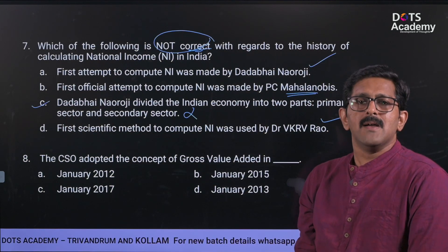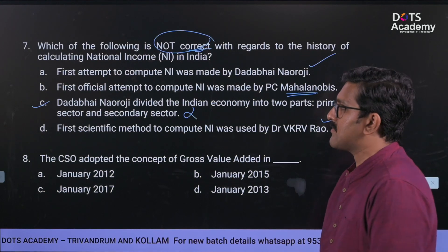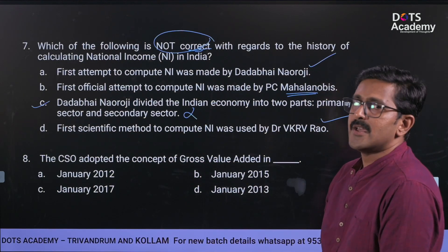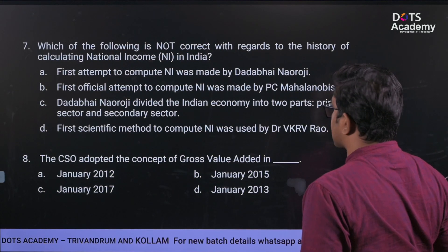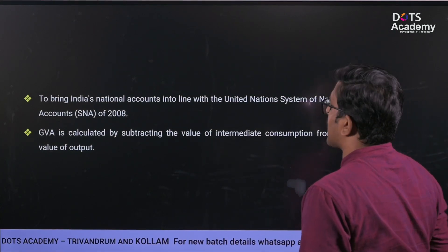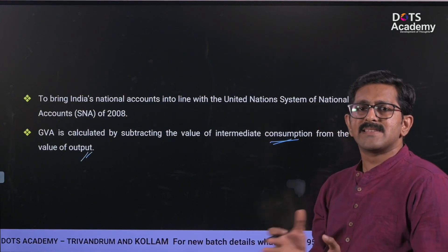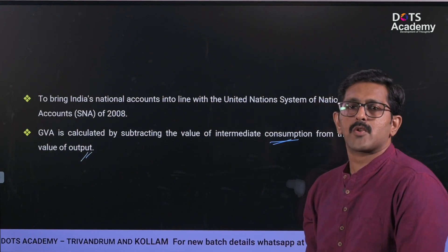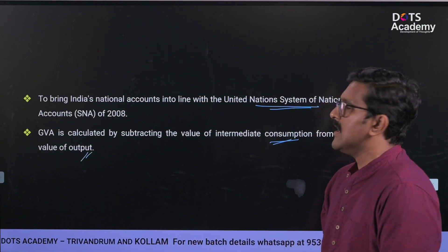Dadabhai Naoroji's notable book is 'Poverty and Un-British Rule in India,' which introduced the drain of wealth theory and is significant in the context of national income calculation. The CSO adopted the concept of Gross Value Added (GVA) in January 2015. GVA is calculated by subtracting the value of intermediate consumption from the value of output, introduced under the United Nations System of National Accounts (2008) as an international standard.